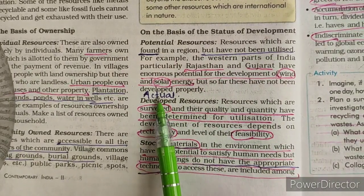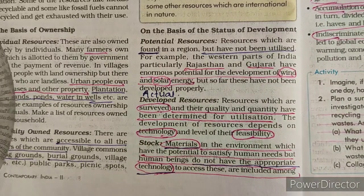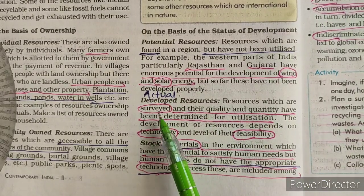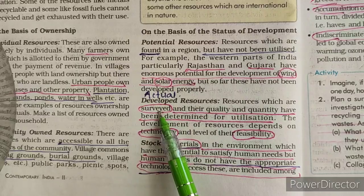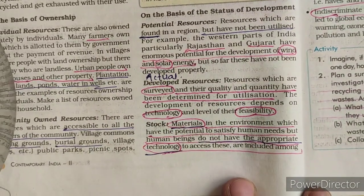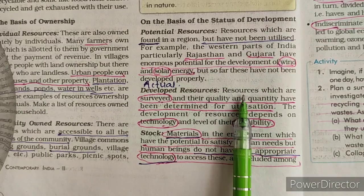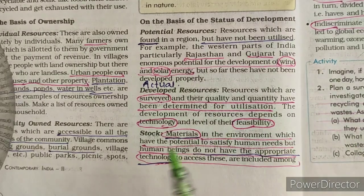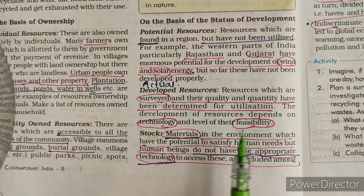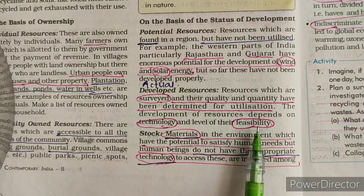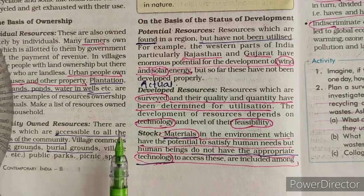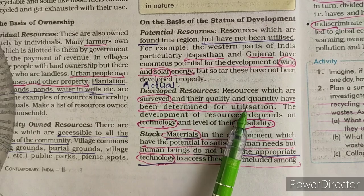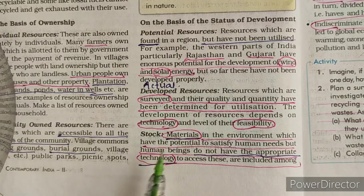Next are developed resources, also called actual resources. Here, quantity and quality is known and these resources have been surveyed. The use of these resources depends upon technology and feasibility — whether they are technologically accessible and economically affordable to people.